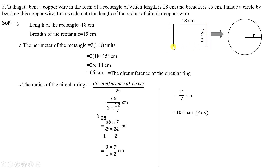So to recap: any shape has a perimeter, but for a circle that special name is circumference. The perimeter of a circle is called circumference. In the next class, I will solve some more complicated problems.